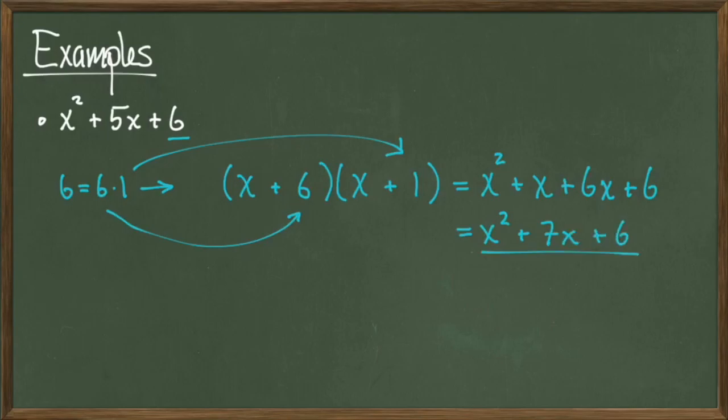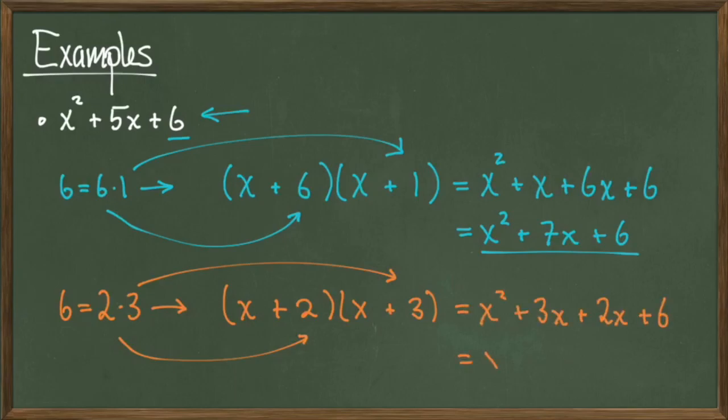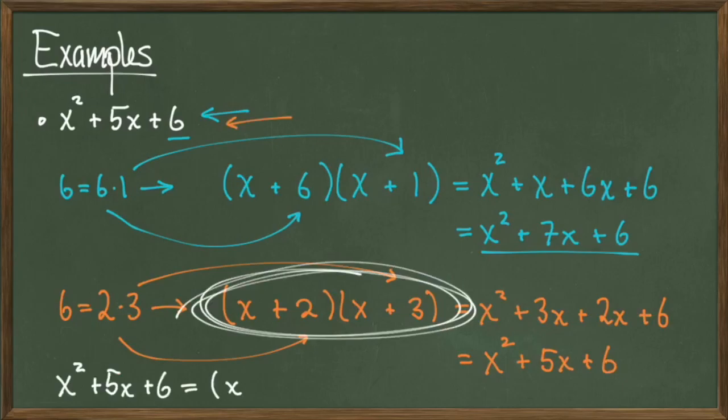This isn't what we started with, so we can conclude that x plus 6 times x plus 1 is not the factored form of x squared plus 5x plus 6. This means that this factorization of 6 is not what we wanted. Instead, let's look at 6 equals 2 times 3. Then I can try FOILing out x plus 2 times x plus 3. When I do this, I actually get x squared plus 5x plus 6, which is the polynomial that we started with. So I can conclude that x squared plus 5x plus 6 equals x plus 2 times x plus 3.